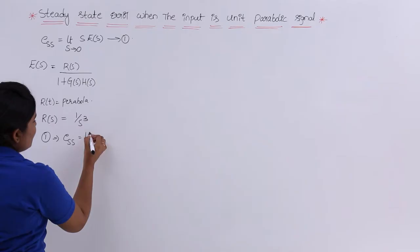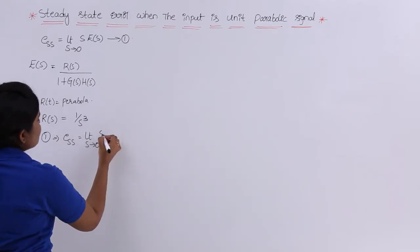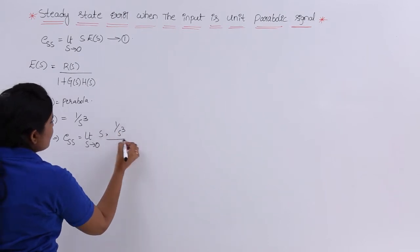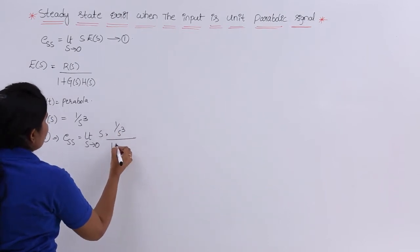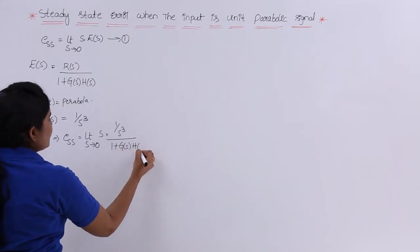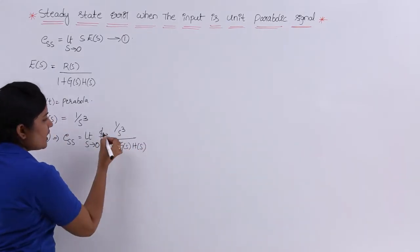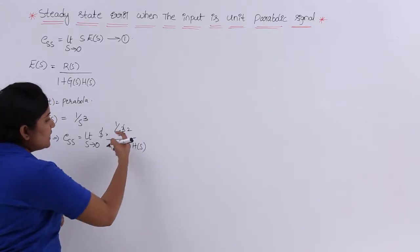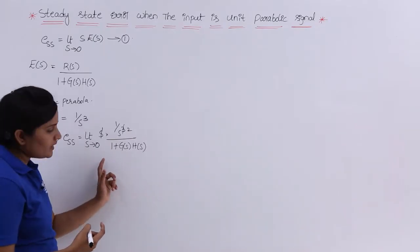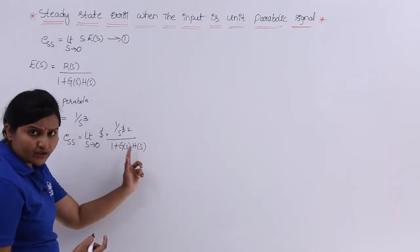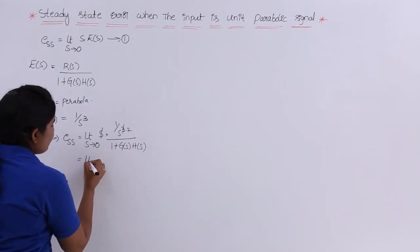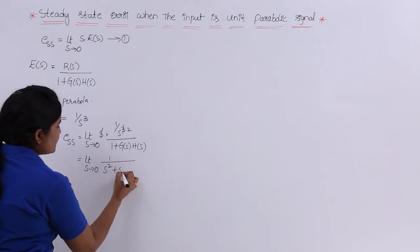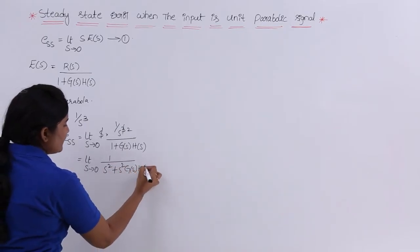So ESS is equivalent to: limit s tending to 0, s into E(s). When writing R(s) as 1/s³, we get s · (1/s³) / (1 + G(s)·H(s)). One power of s cancels with s³, leaving s². Taking s² to the denominator and multiplying, ESS becomes: limit s tending to 0, 1 / (s² + s²·G(s)·H(s)).